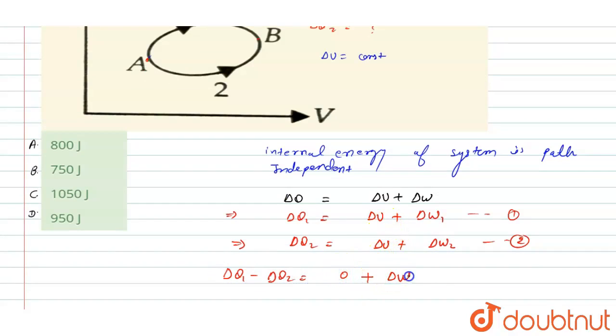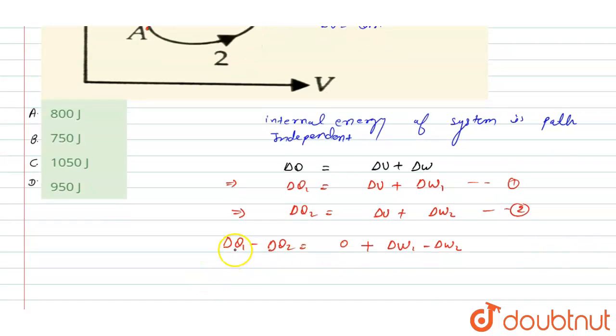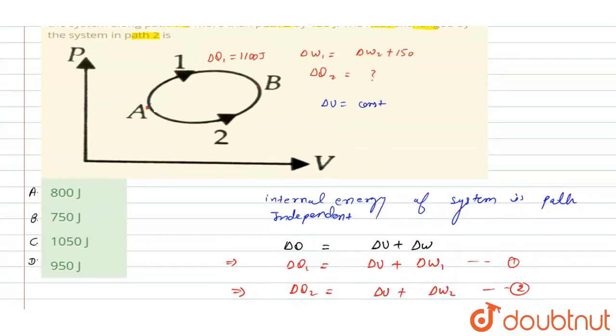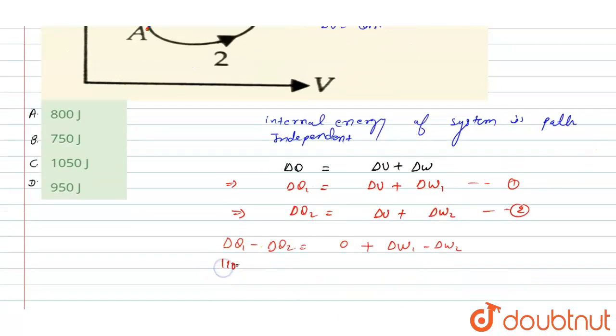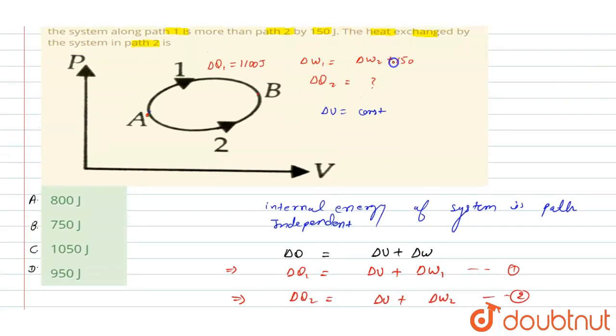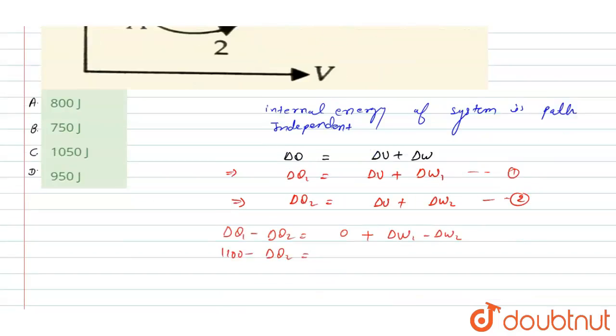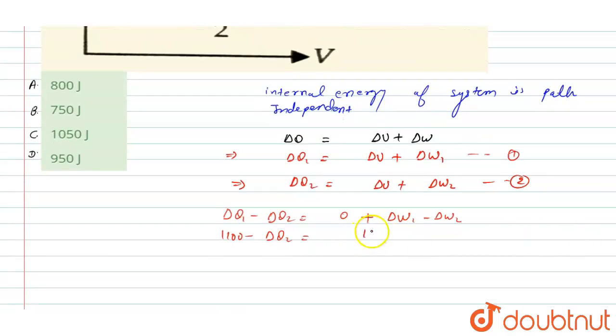So del Q1 we have given as 1100, so we can put the values here. Del Q2 we have to calculate. Del W1 minus del W2, so del W1 minus del W2 will be 150. So we can write here this will be 150. Now del Q2 will be equal to 1100 minus 150.